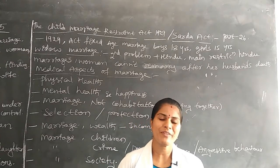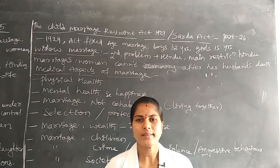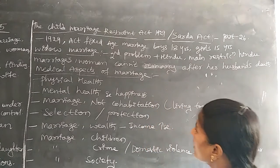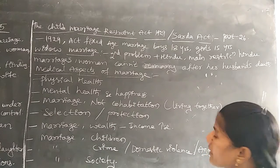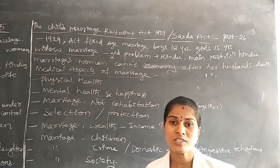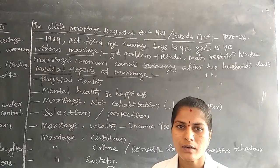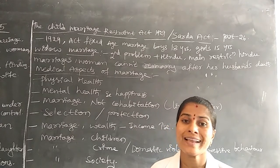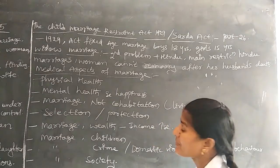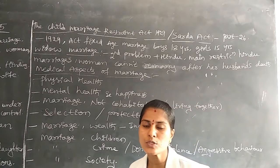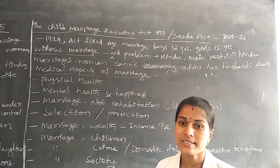Due to the restriction on widow remarriage in Hindu culture, widowed women face many sufferings. They are not able to fulfill their needs, and some broken or widow families are driven toward prostitution as a result. There is a restriction that once you lose your husband, you cannot marry a second time, and this restriction is supported by certain acts.